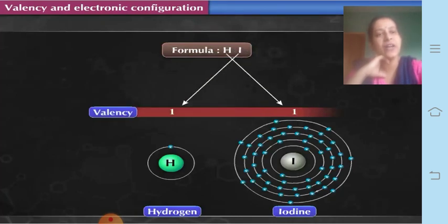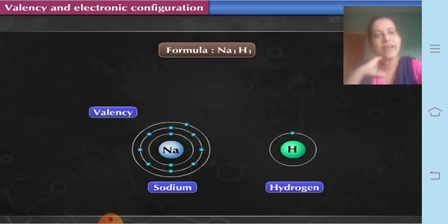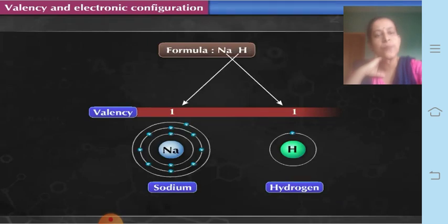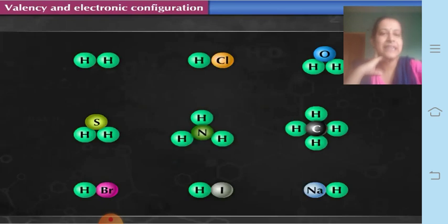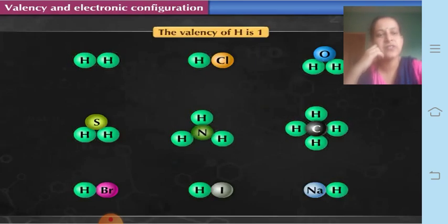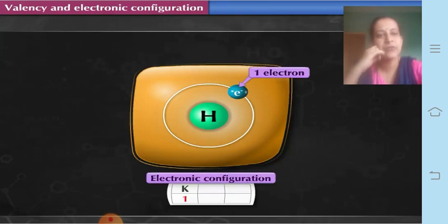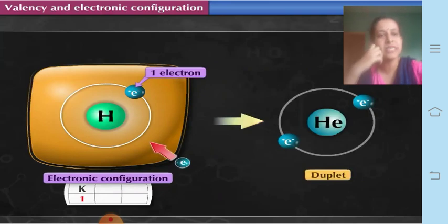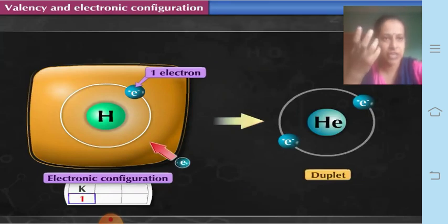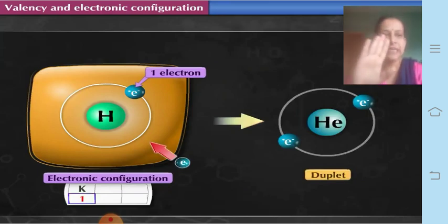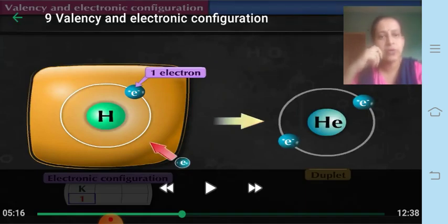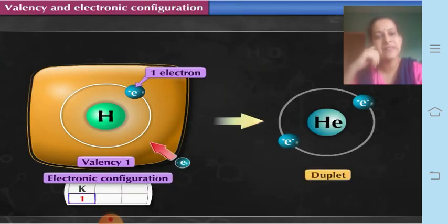In HI, the valency of hydrogen is 1 and that of iodine is also 1. In sodium hydride, valency of sodium is 1 and that of hydrogen is also 1. In all these cases, we find that hydrogen always has valency equal to 1 — whatever compound it forms. Hydrogen has one electron in its outermost shell (K shell) and requires one more to complete its duplet like helium.